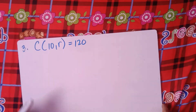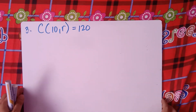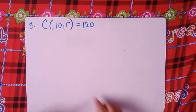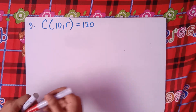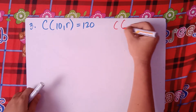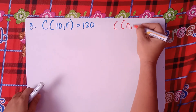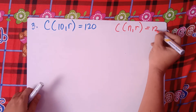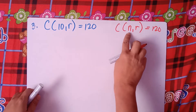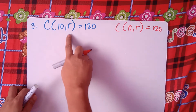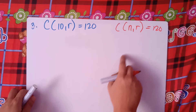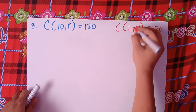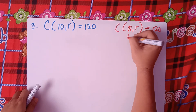In finding r, we have an example: C(10, r) = 120. In combination notation, C(n, r), n is the top value and r is what we need to find. So our n is 10 and the combination result is 120, and we are told to find r.